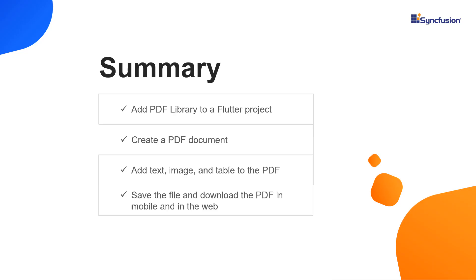That's it. Let me summarize the main points. You saw how to add the Syncfusion Flutter PDF library to a Flutter project. You learned how to create a PDF document and add pages, text, images, and tables. You also learned how to save the PDF document in mobile and in the web. You can download this working example from the GitHub link and documentation link in the video description below. You can also check whether you are eligible for our community license, which gives you a free license key to use our Flutter products. If you found this video useful, click the like button and subscribe to our channel to get notifications about new videos. Thanks for watching.